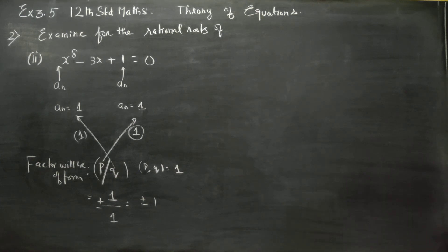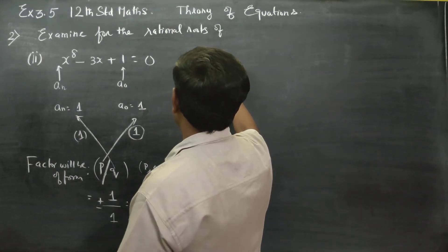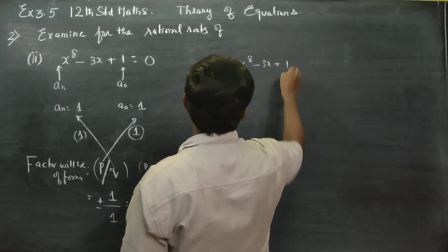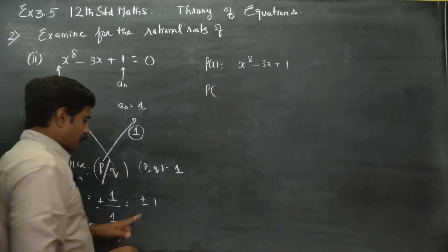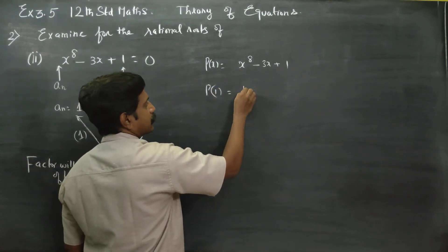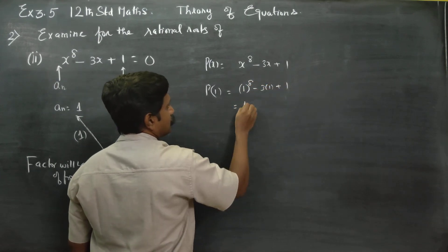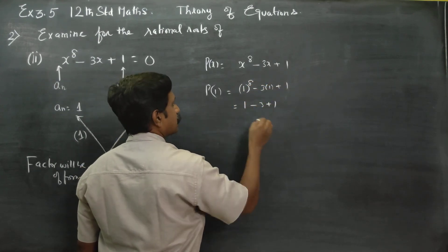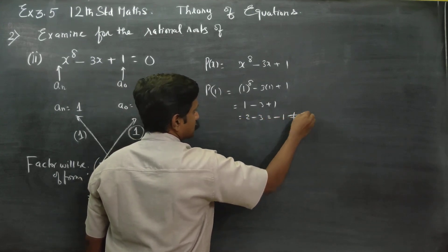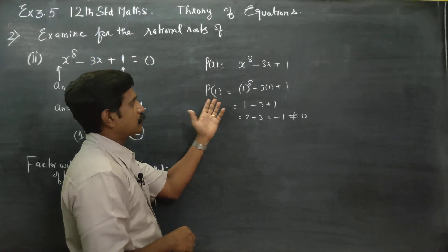You can use remainder theorem or synthetic division. Using remainder theorem, make it as a polynomial: P(x) = x^8 - 3x + 1. If you substitute one of the roots, the answer should be 0. Substituting x = 1: 1^8 - 3(1) + 1 = 1 - 3 + 1 = -1, not equal to 0. Therefore, this is not a root, not the solution.